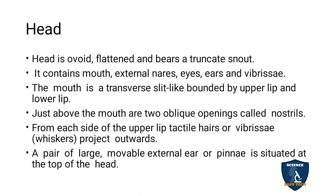The head contains the mouth, external nares, eyes, ears, and vibrissae. The mouth is transversely slit — it slits like this — and has upper and lower lips. The mouth also has two oblique openings called nostrils in the nose region.